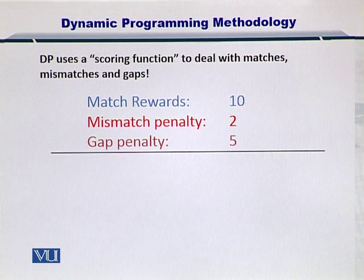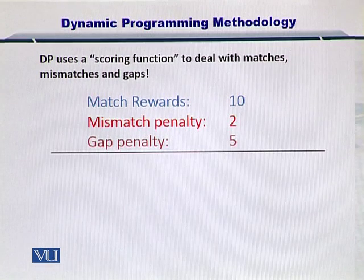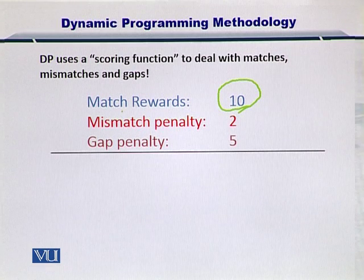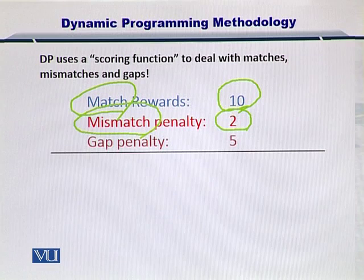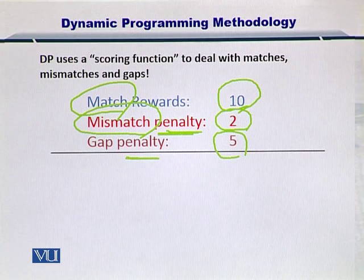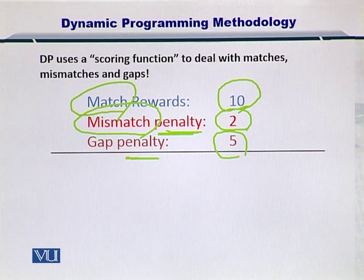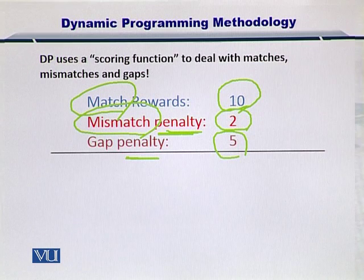Let's take a quick example. I have constructed this example by giving you plus 10 for matching, minus 2 for mismatch — so it's a penalty — and a gap penalty of minus 5. So now we're going to score every match with plus 10, every mismatch with minus 2, and every gap with minus 5.